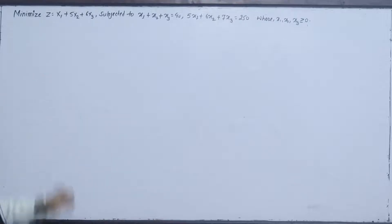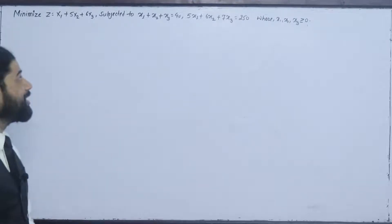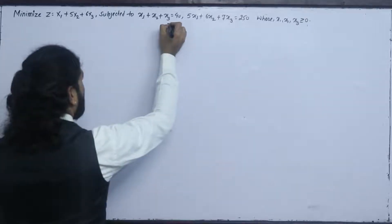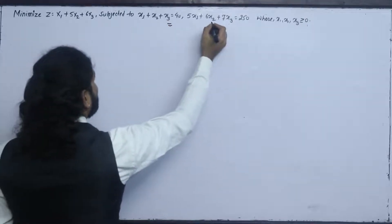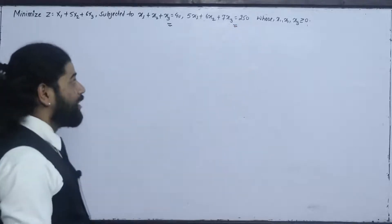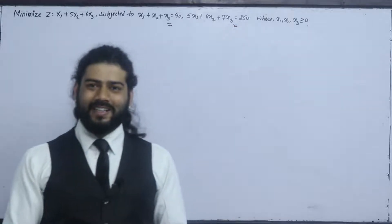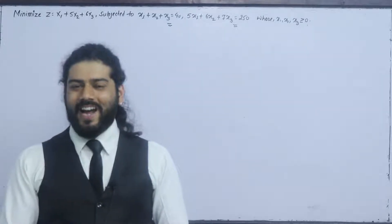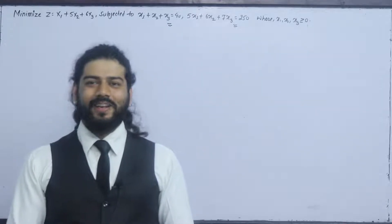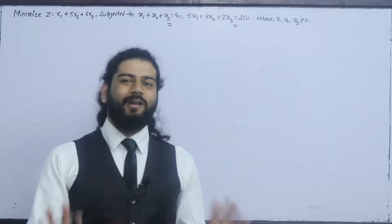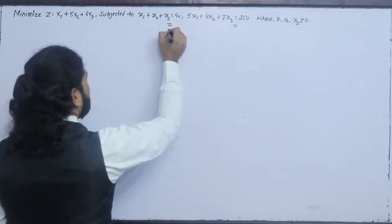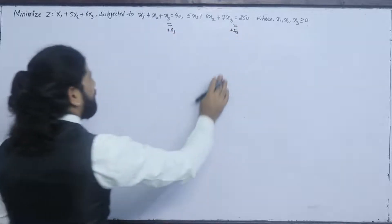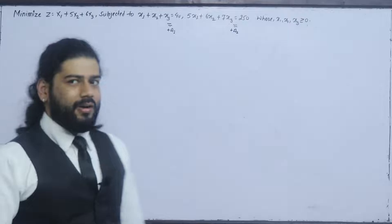Minimize Z equals to x1 plus 5x2 plus 6x3, subjected to x1 plus x2 plus x3 equals to 40, and 5x1 plus 6x2 plus 7x3 equals to 250. We add artificial variables A1 and A2 to convert this into standard form.